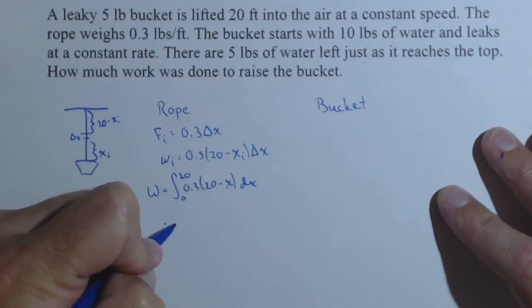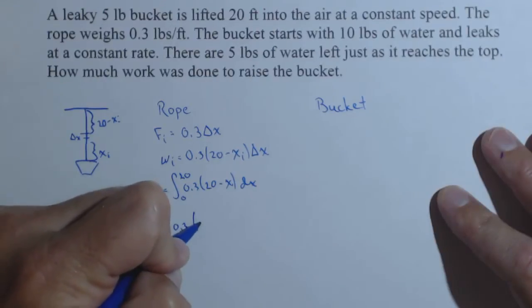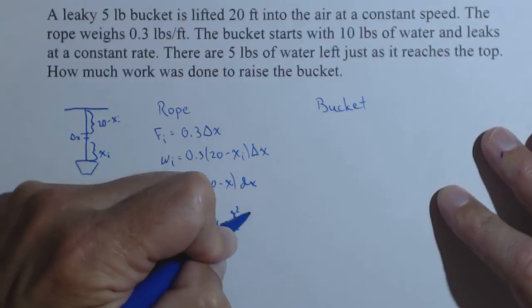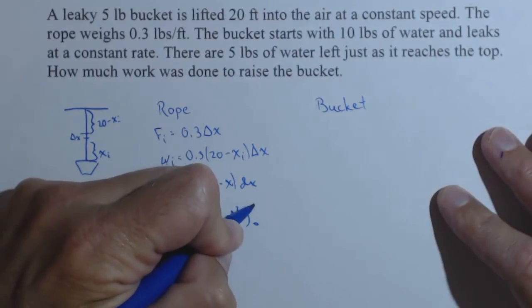So we can pull the 0.3 out front and we're going to have 20x minus x squared over 2 from 0 to 20.